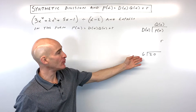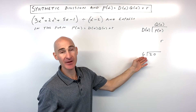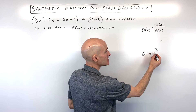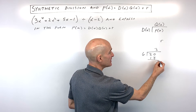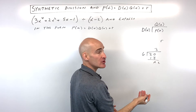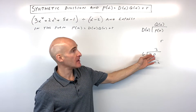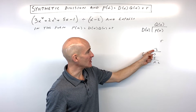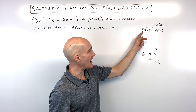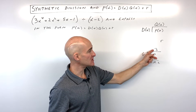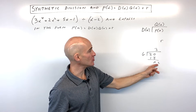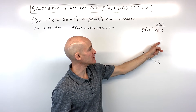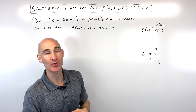Let's take a simple numerical example, like 20 divided by 6. How many times does 6 go into 20? It goes in 3 times. 3 times 6 is 18, and the remainder is 2. So if we want to get back to 20 — which is like our original polynomial — we take 6 times 3, which is our divisor times our quotient. So 6 times 3 is 18, plus the remainder 2 gives us back 20. So: divisor times the quotient plus the remainder gives us back our original polynomial.